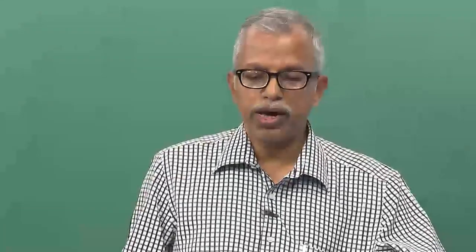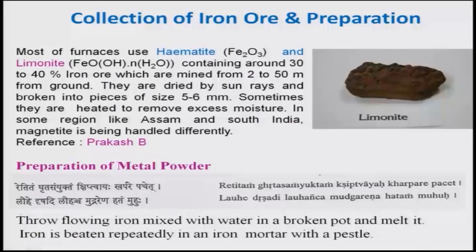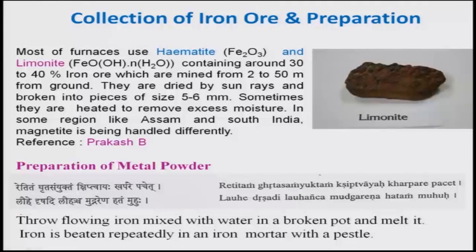The iron ore had to be collected and identified. Most furnaces used hematites and limonite containing around 30 to 40 percent iron ore, which were mined from 2 to 50 meters from the ground level. Once these iron ores were obtained from the mines, they would be dried using sun rays and broken into pieces of about 5 to 6 mm. If moisture was more in the iron ores, they would heat it at a low temperature so that excess moisture would be removed. In some regions like Assam or South India, magnetite was handled differently as it is a different kind of iron ore.